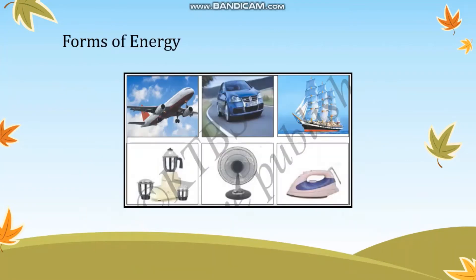Now let us look at the different forms of energy all around us. These images show an aeroplane taking off, a car being driven on the road, and a boat sailing — all requiring different forms of energy. Electrical appliances also function on various forms of energy. Let us understand the various forms of energy in this module.